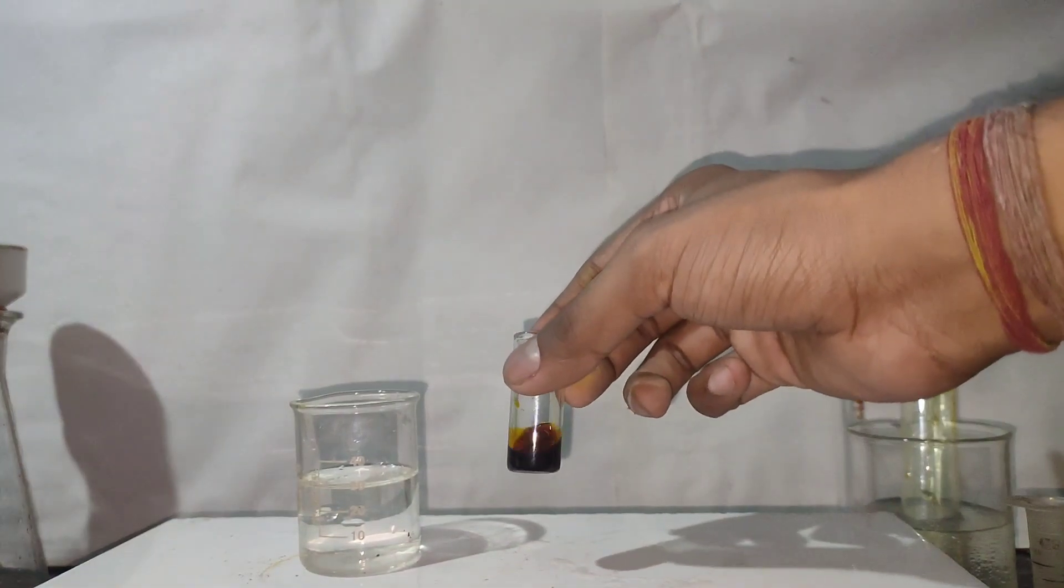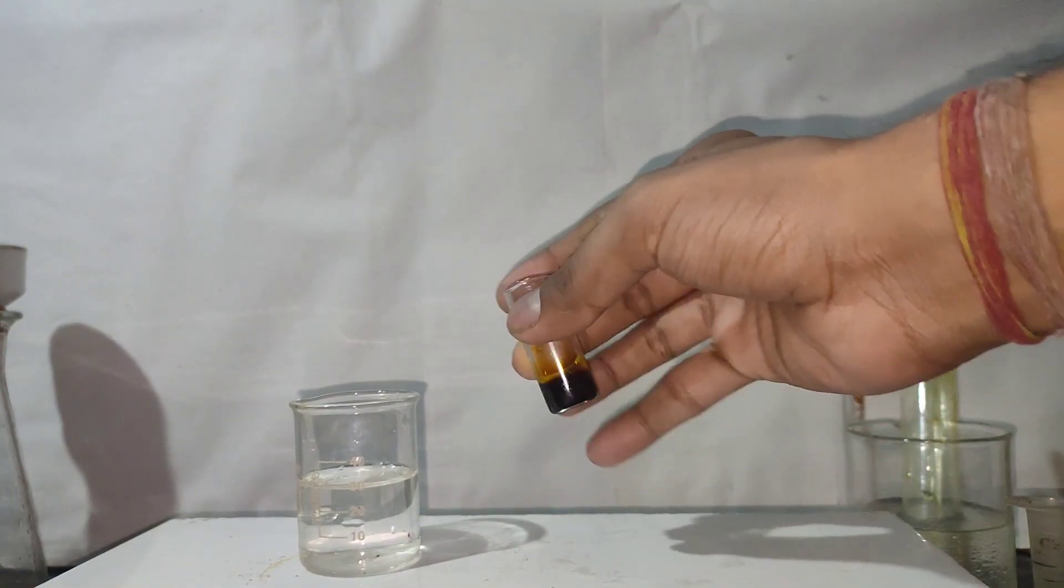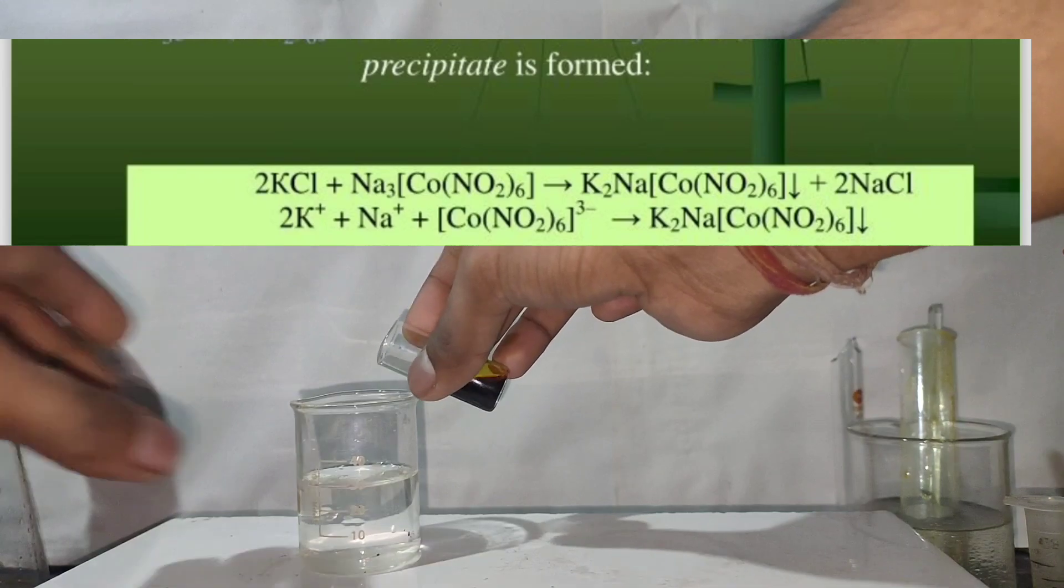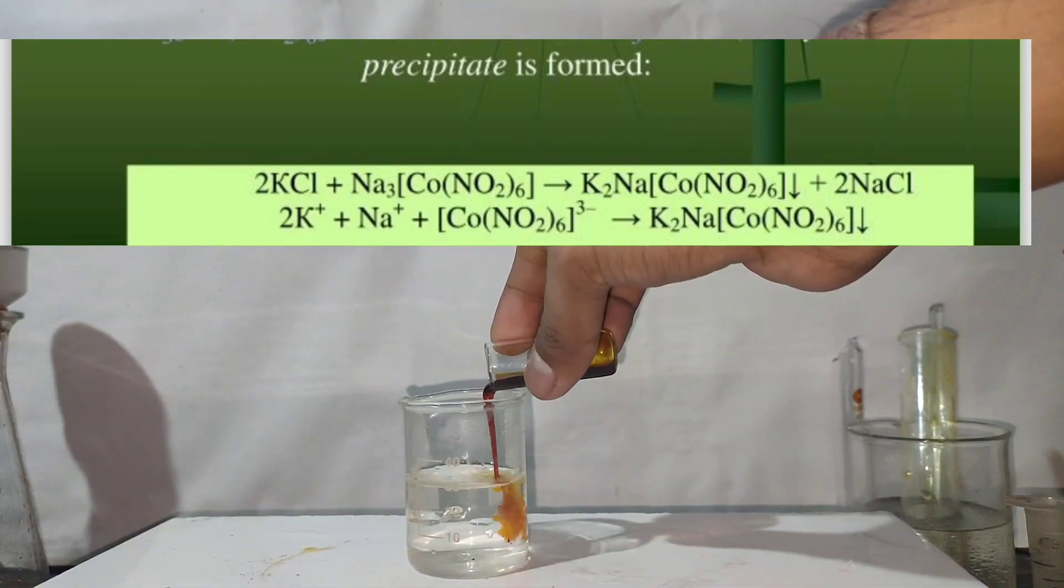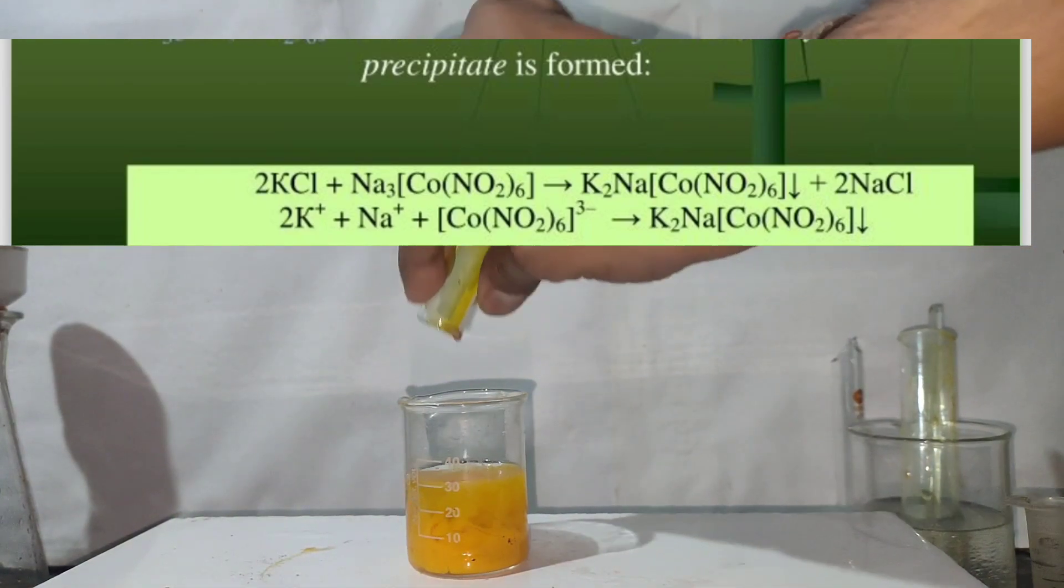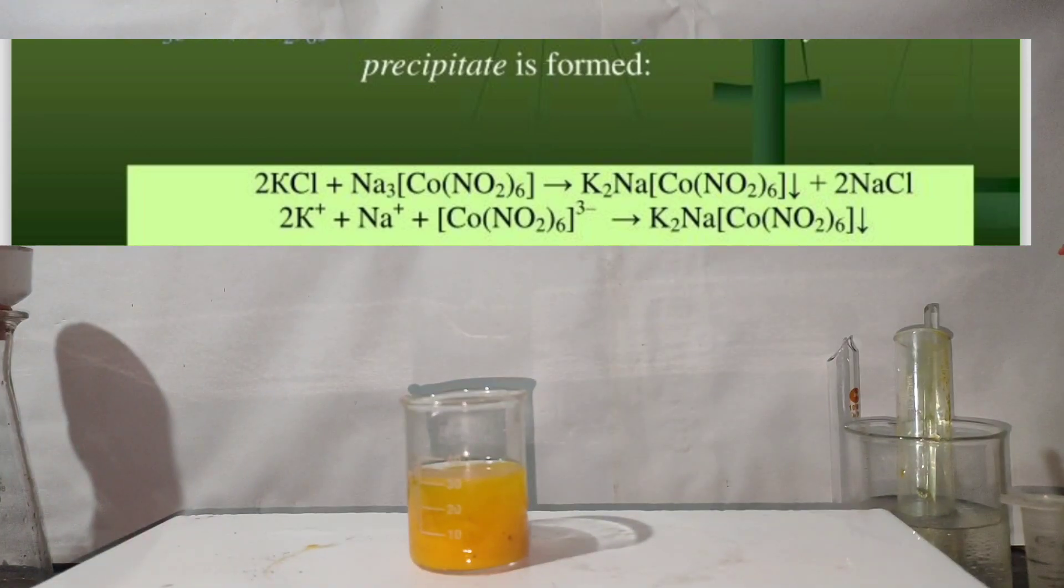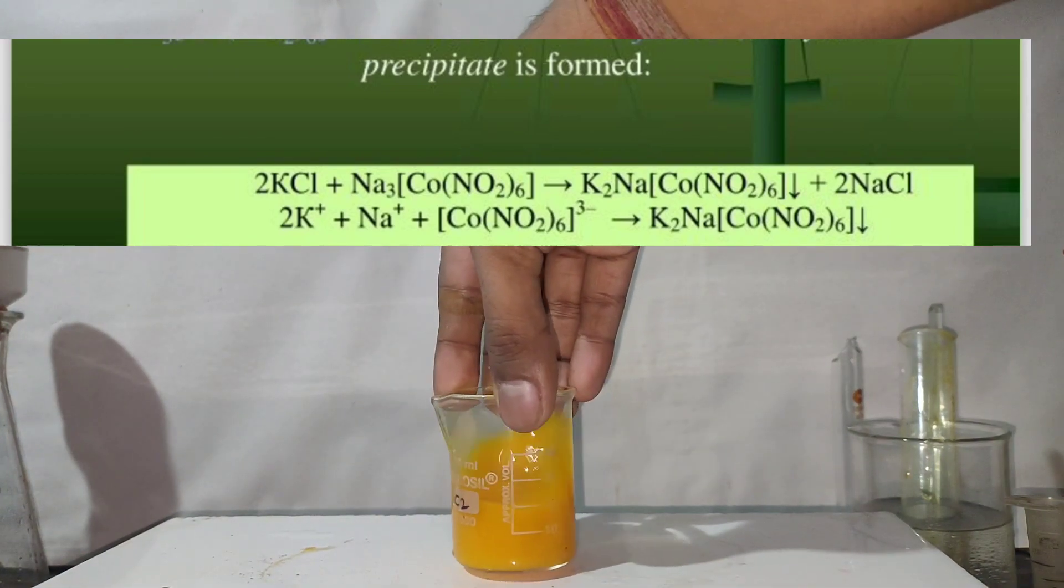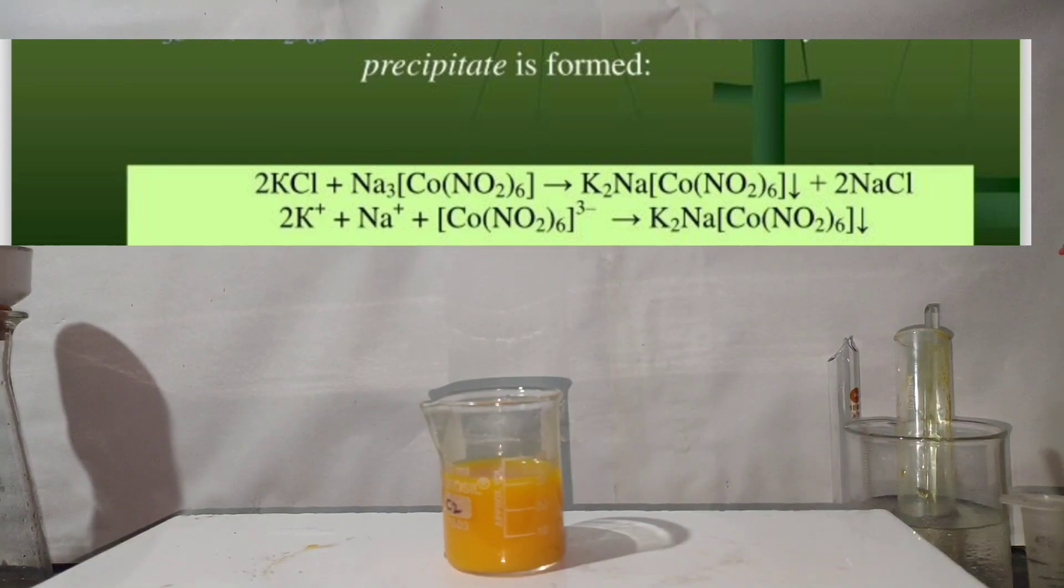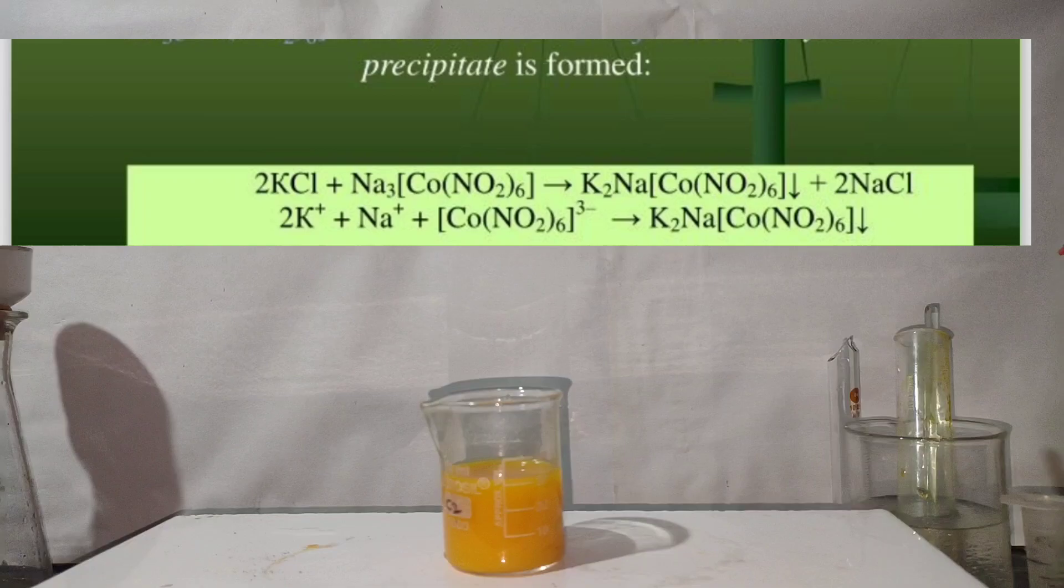Here in the beaker, I have a solution of potassium chloride. To it, I will be adding sodium hexanitrocobaltate solution. On adding it, immediately you can see the formation of a yellow precipitate. This precipitate is sodium potassium hexanitrocobaltate 3. Thus, this reagent can be used to detect the presence of potassium ions in solution.